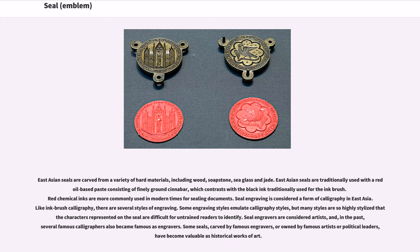Red chemical inks are more commonly used in modern times for sealing documents. Seal engraving is considered a form of calligraphy in East Asia. Like ink brush calligraphy, there are several styles of engraving. Some engraving styles emulate calligraphy styles, but many styles are so highly stylized that characters represented on the seal are difficult for untrained readers to identify. Several famous calligraphers also became famous as engravers.